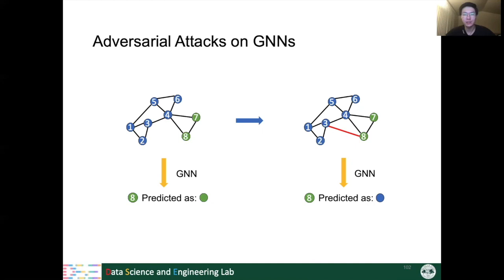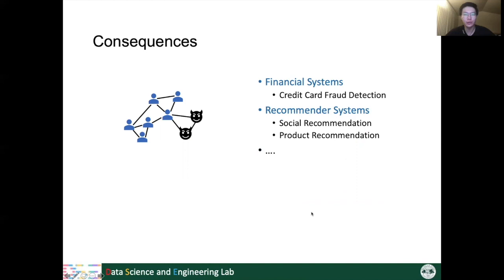Why is this problem important? If the graph is a credit card transaction graph and the two green nodes are fraudsters, the fraudster can connect with some high-credit users to disguise itself and escape detection by the GNN model. This can be very detrimental. Except for financial systems, graph adversarial attacks can also harm recommendation systems like social recommendation on Facebook and product recommendation on Amazon, where the attacker can change the ranking of recommended items.